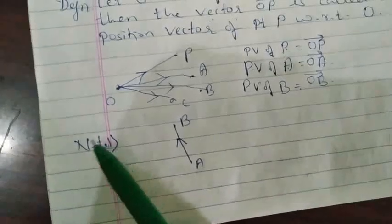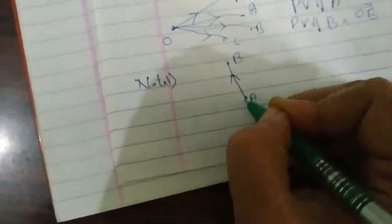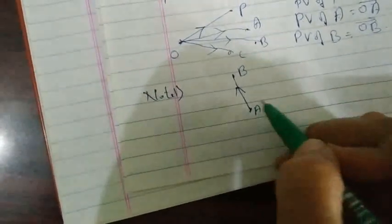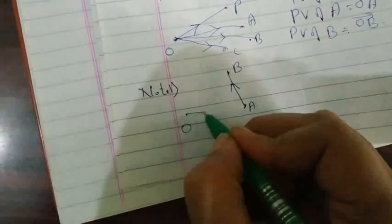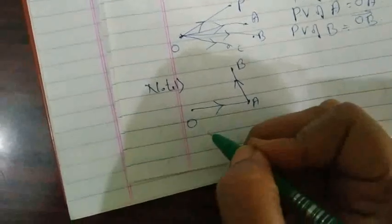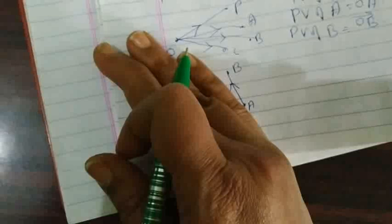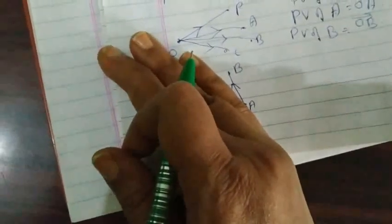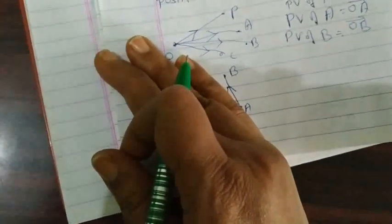Note number 1: Given AB vector in the plane, A is the initial point and B is the terminal point — both are points. If A is a point, it has its own position vector. Fixing O as the fixed point, from O to A we get OA vector as the position vector of A. Similarly, B is also a point, so its position vector is OB vector.